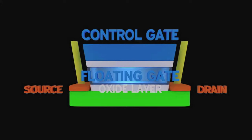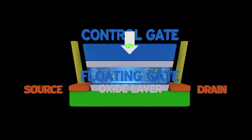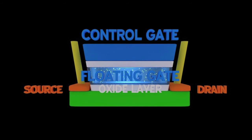The floating gate transistor is a combination of logic gates and a transistor. The floating gate is insulated by a layer of silicon oxide. In order to add a charge to the floating gate, a high voltage has to be applied to the control gate so that electrons can jump through the insulating layer onto the floating gate. Writing data involves applying a high voltage of 12 volts to the control gate and 7 volts to the source. This allows electrons to jump through the insulating oxide layer onto the floating gate, giving it a negative charge.